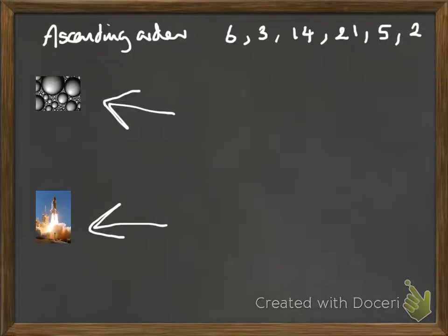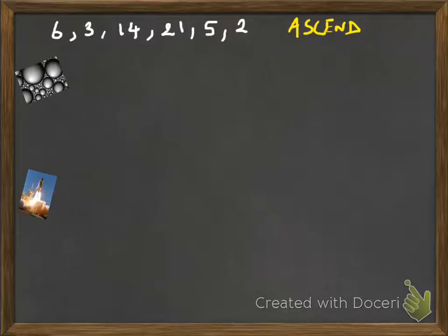So these are the numbers that we're going to be using: 6, 3, 14, 21, 5 and 2, and we're going to be using these pictures just to show which one is which. Bubble, Shuttle. Okay so here we go. Bubble versus Shuttle. I've put the original set of numbers up here and it is going to be in ascending order as well.